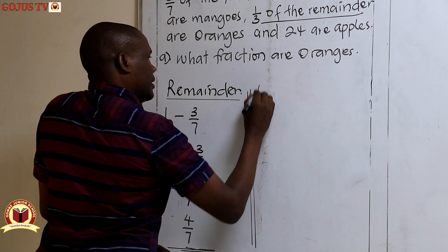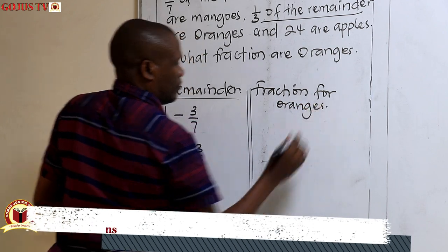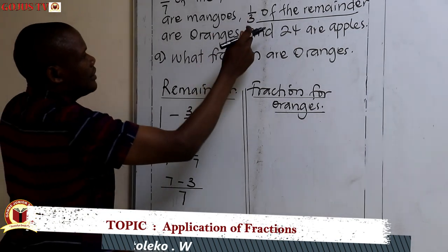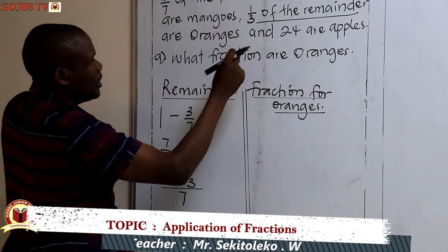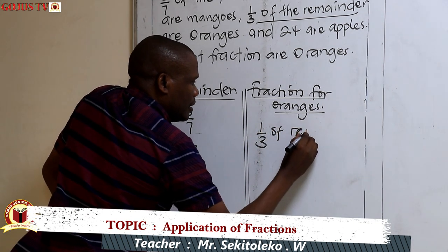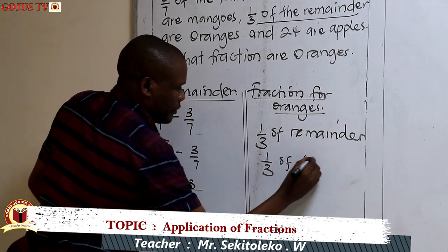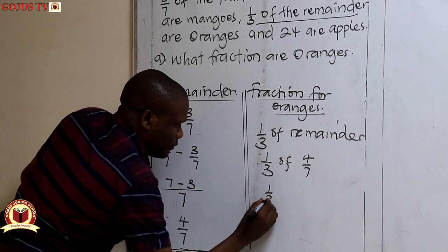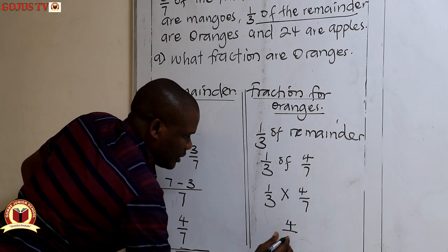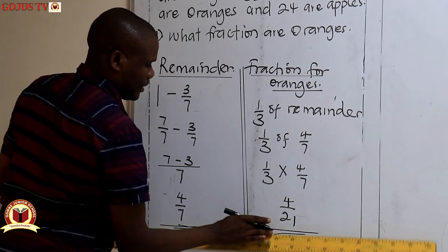Now the fraction for oranges: we are told one-third of the remainder are oranges. So the fraction for oranges is one-third of four-sevenths. Replacing 'of' with multiplication, one-third times four-sevenths gives four over twenty-one. Therefore the fraction for oranges is four out of twenty-one.